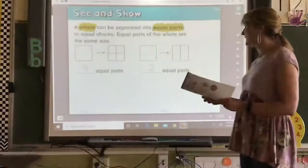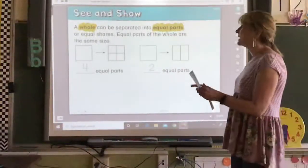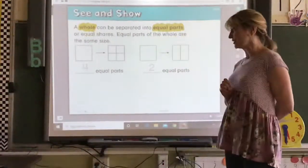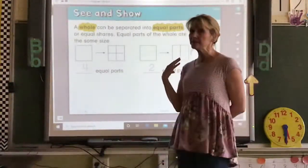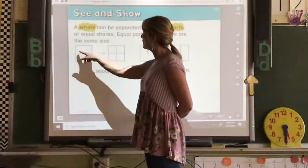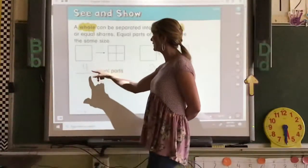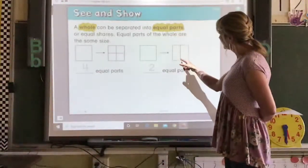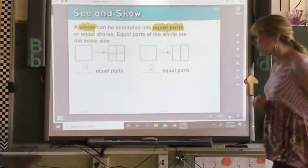Open up to the inside. It says a whole can be separated into equal parts or equal shares. Equal parts of the whole are the same size. If they're not the same size, they're not equal. So, they took this square and they divided it into four small squares or four equal parts. They took this square and they drew a line down the middle and had just two equal parts on that one.